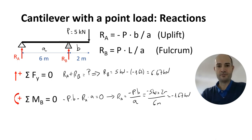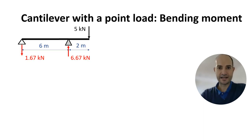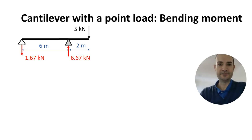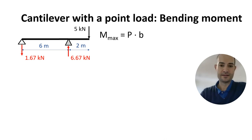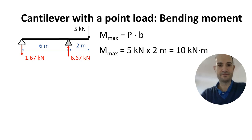So now we have the reactions, let's calculate the moments. To calculate the maximum moment in this situation it's just the point load times the cantilever span. In this case 5 kN times 2 meters equals 10 kN·m. But let's also calculate the moment diagram along the beam.